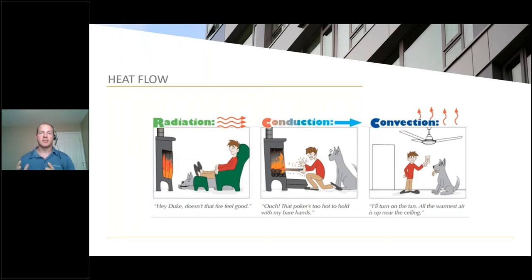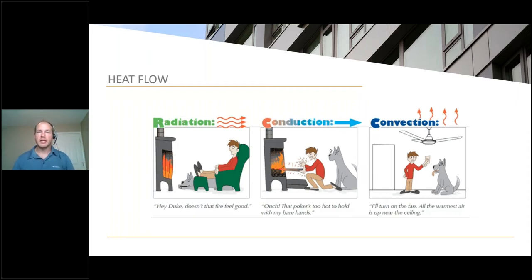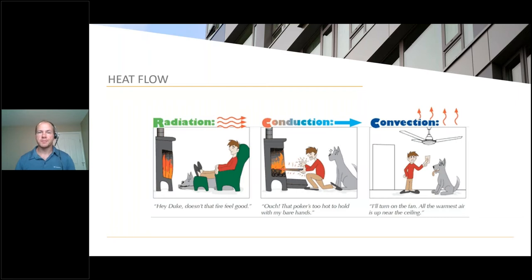Heat and unwanted heat movement occurs in one of three separate ways. Radiation, where heat moves from a warm thing to a cold thing without touching anything in between. The second is conduction, which occurs either in solid objects or when solid objects are in contact with each other — heat moving from hot to cold through a solid. Convection is when heat is being moved by moving air or, more scientifically, a moving fluid.